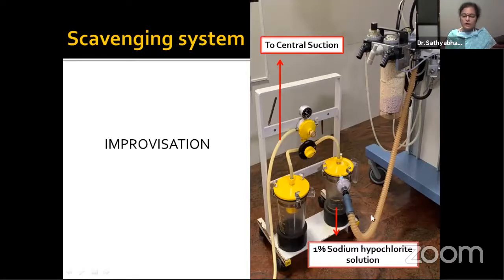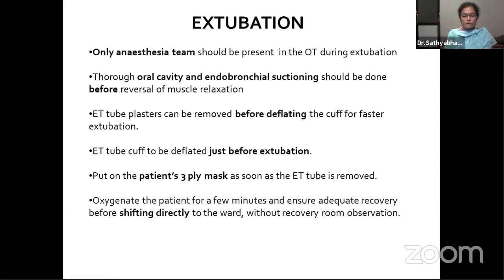Take adequate time to fix the endotracheal tube firmly and recheck air entry, as once the intubation cover is removed, any tube displacement means the whole process of safe intubation has to be repeated. After intubation, the cover is removed by rolling it inward so as not to expose contaminated surfaces. Outer gloves are removed inside the cover and disposed in the right bin. Hand hygiene should be performed after removing gloves, after contact with soiled areas, before touching the anesthesia machine, and after every contact with the patient.